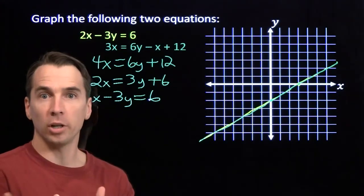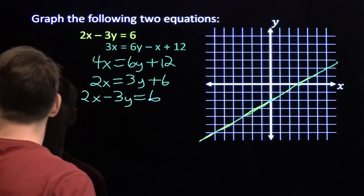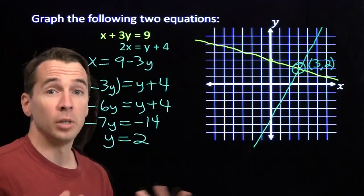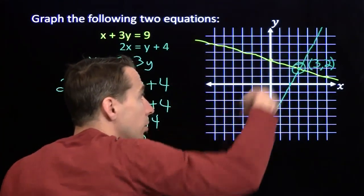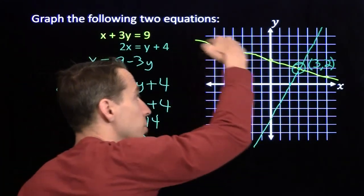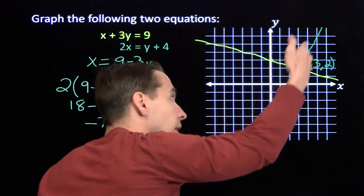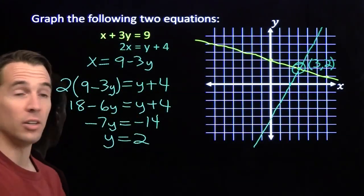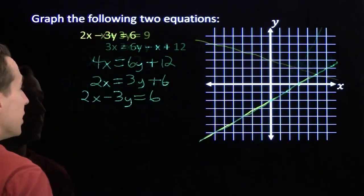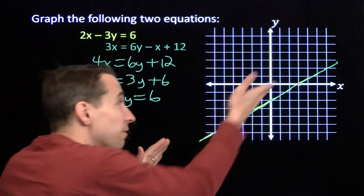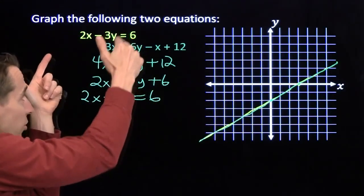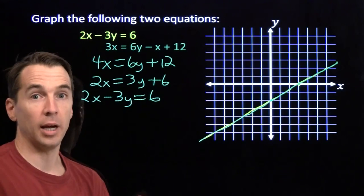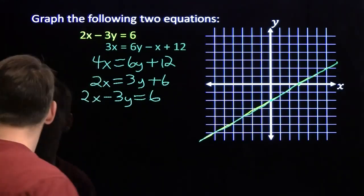Thinking back to when we talked about systems of equations, we saw systems of linear equations had this possibility: exactly one solution — that corresponds to when the lines intersect at one point. We also have this possibility: infinitely many solutions — the equations are the same, and when we graph them, they come out to be the same line. Now there was one more possibility.